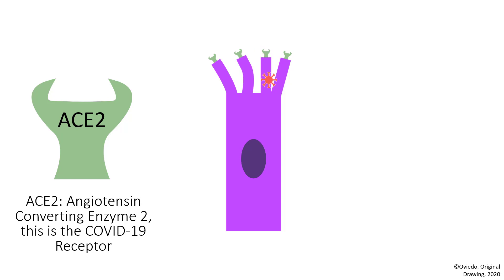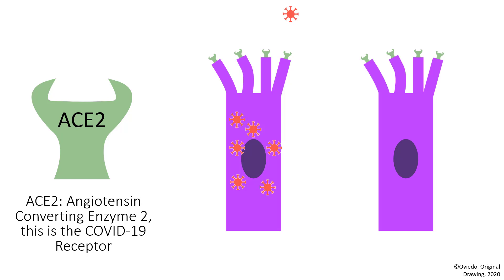However, the virus uses the ACE2 receptor for its own purposes in order to infect the cell. Once it's inside the cell, it can use all the resources of that cell to make more viruses. Once these viruses are made, in addition to damaging and killing that particular cell, they can come back out into the air — out someone's mouth or nose — to infect another person. The virus can also infect all the surrounding respiratory cells and replicate in those cells as well.